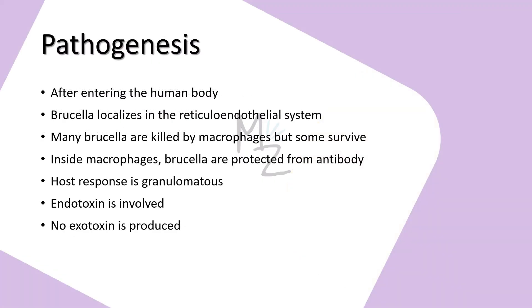Pathogenesis: After entering the human body, Brucella localizes in the reticuloendothelial system — namely the lymph nodes, liver, spleen, and bone marrow. Many Brucella are killed by macrophages, but some survive within these cells, where they are protected from antibodies. The host response is granulomatous, with lymphocytes and epithelioid giant cells, which can progress to form focal abscesses. Endotoxin is involved, and no exotoxin is produced.